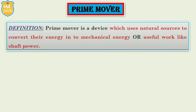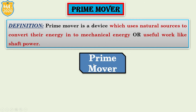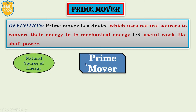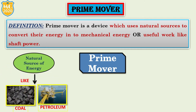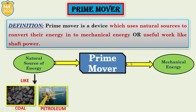First, we understand the definition of prime mover in a simple way. So this is the definition — now how to memorize it. Let's see one example. A prime mover is a device that uses natural sources like coal, petroleum, and other gases.